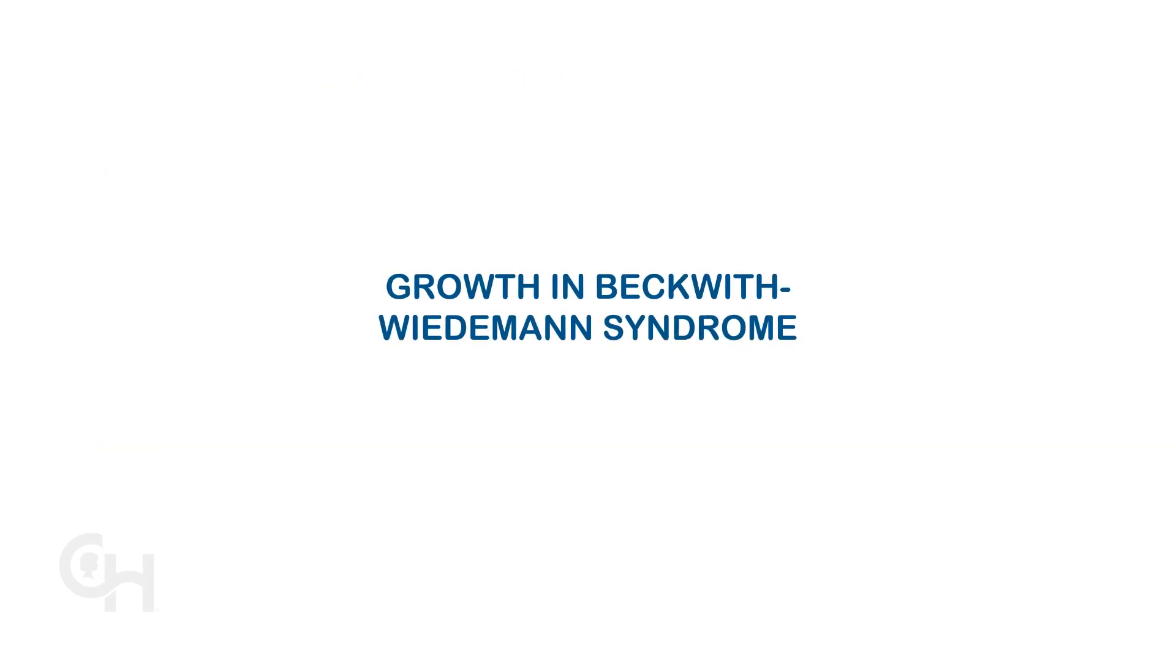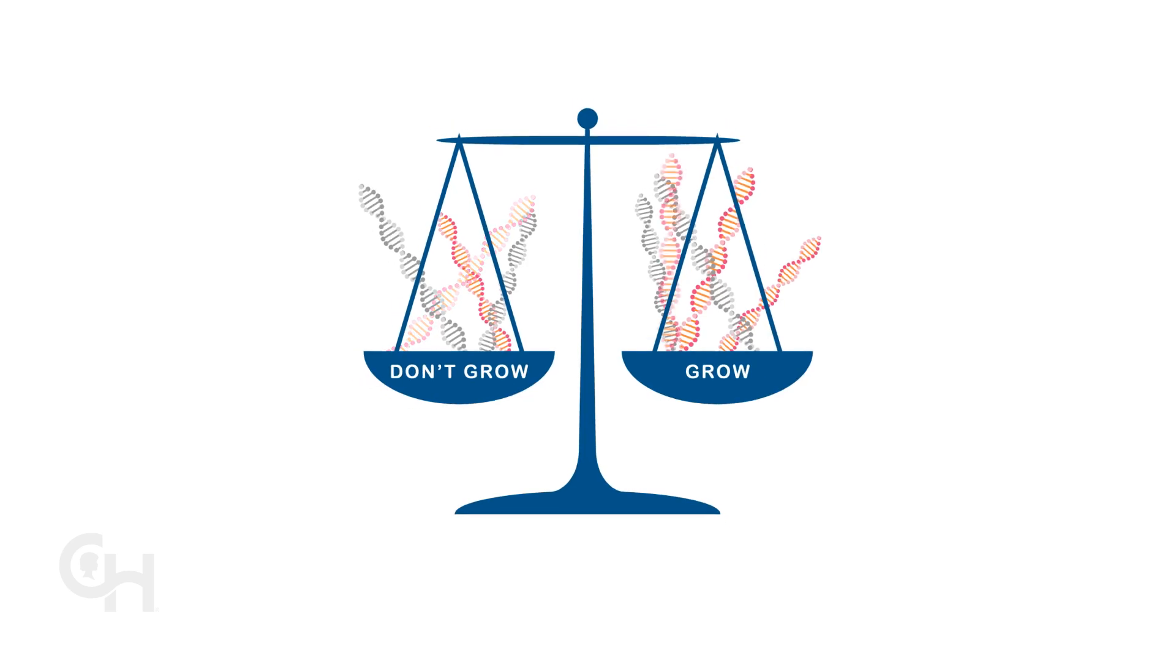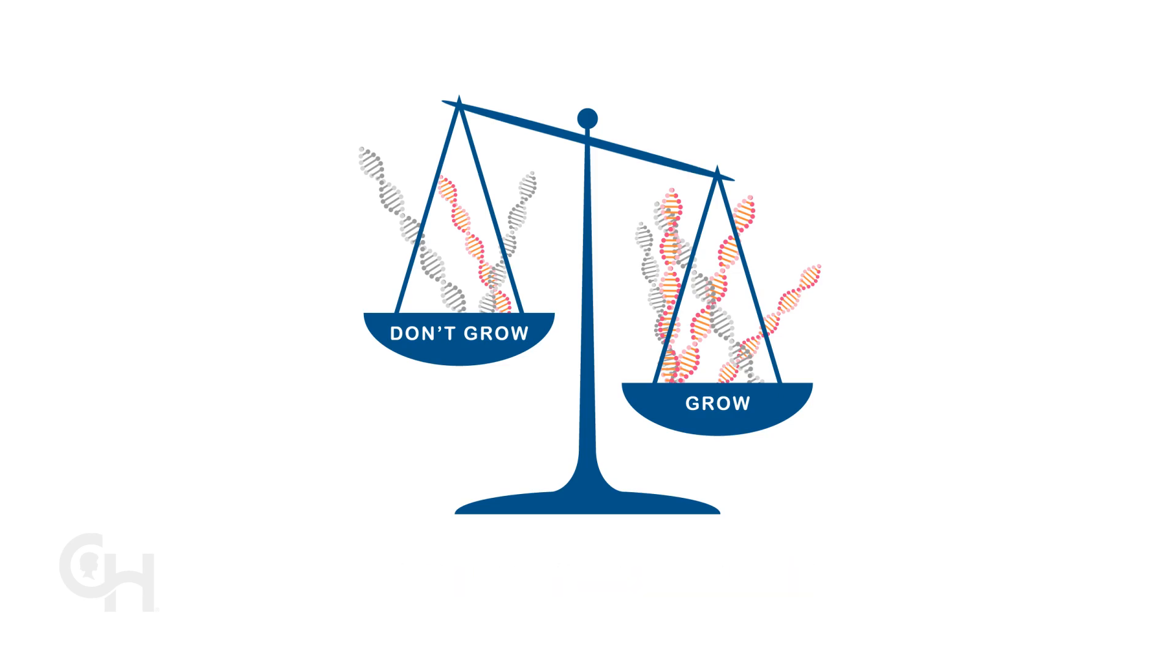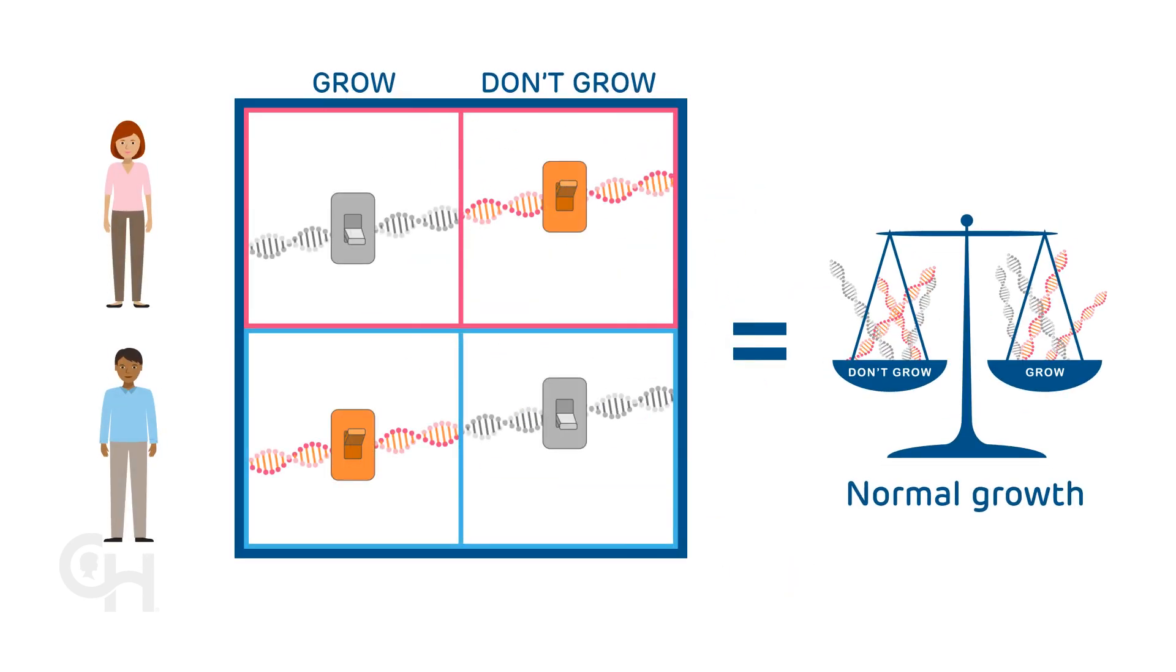Now let's look at how changes on chromosome 11 result in BWS. A child with BWS has an imbalance between genes that cause growth and genes that limit growth. This imbalance results in the child having too many genes turned on that cause growth or not enough that limit growth. The changes on chromosome 11 cause the switches of methylation to be marked or unmarked in a different way. There are several different changes on chromosome 11 that are known to cause BWS.